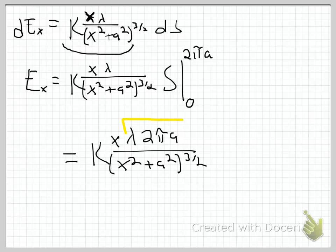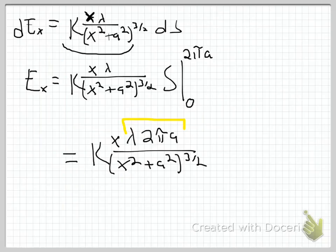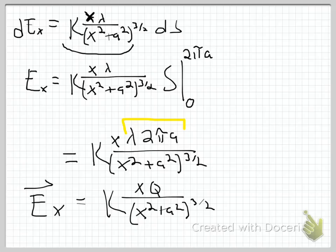Now this quantity here. Notice we've defined lambda as Q over 2πA. So lambda times 2πA is just going to get me Q. So this whole thing works out to be K times Q, there's an X there, over X squared plus A squared to the 3 halves. If I need to make this a vector, if I need to make this EX vector, well, I can get the direction from inspection, it's all in the X direction. I would do this, or maybe this, depending on which one you like, or even this, depending on if you like that form. And there's your direction.